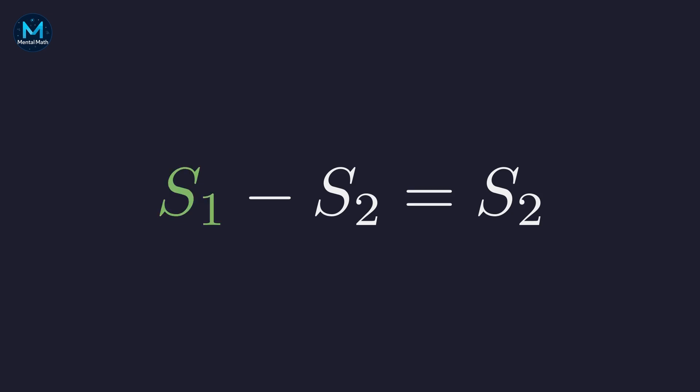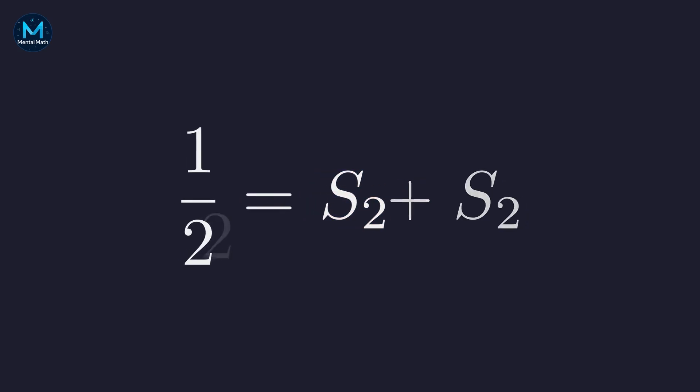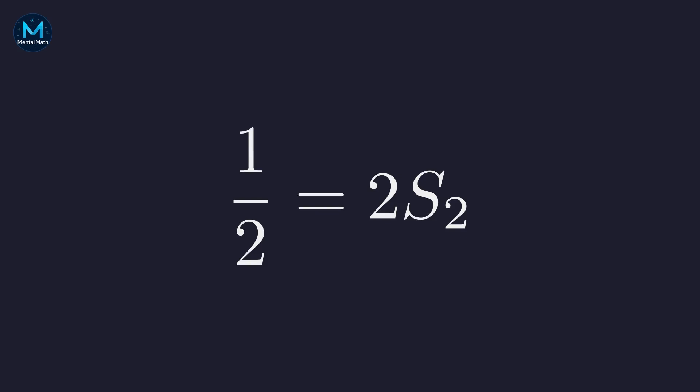From our previous work, we know that the assigned value of S sub 1 is 1 half. Substituting this value gives us 1 half minus S sub 2 equals S sub 2. Now we solve for S sub 2. Let's add S sub 2 to both sides. This leads to 1 half equals S sub 2 plus S sub 2. Combining the terms gives us 1 half equals 2 times S sub 2. To isolate S sub 2, we divide both sides by 2. This yields our second key result: the value assigned to S sub 2 is 1 fourth. We are now ready for the final step.